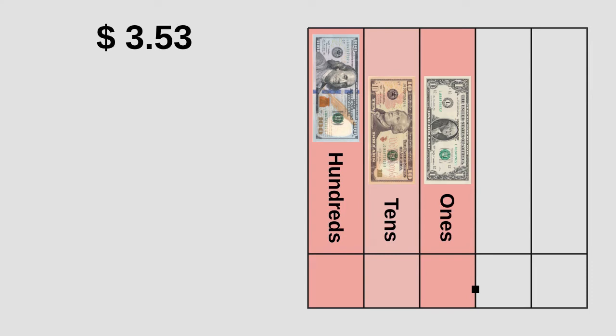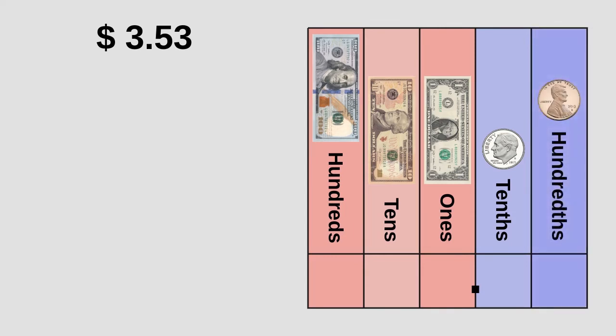Now it's the turn of the cents. In the tenths column, we put the ten cent coin or dime. And in the hundredths column, we put the one cent coin or penny. These columns correspond to the amount in cents. Now we can use this place value chart to know what bills and coins can make three dollars and 53 cents.